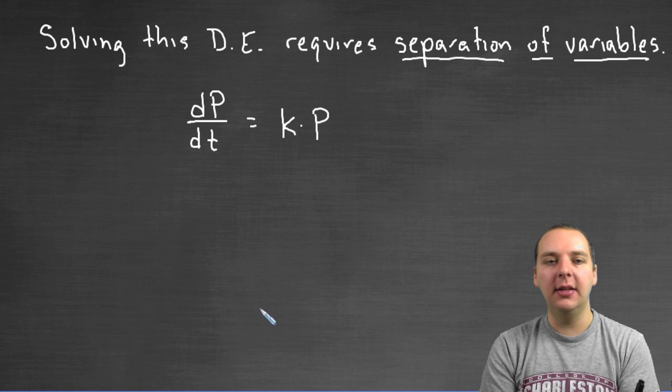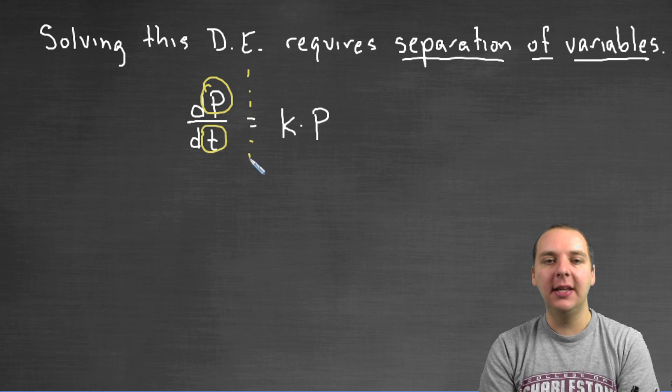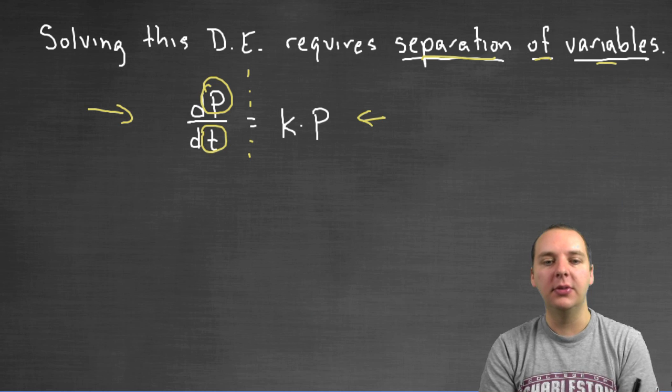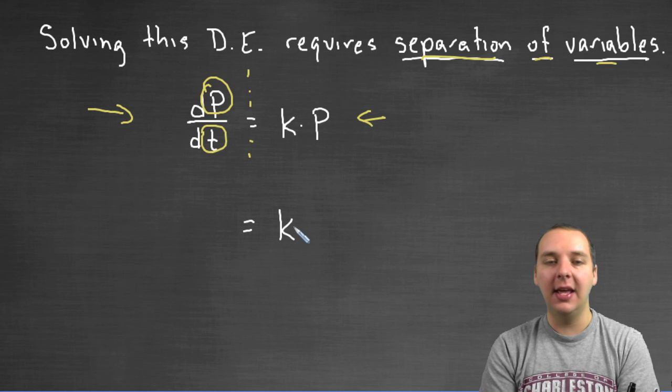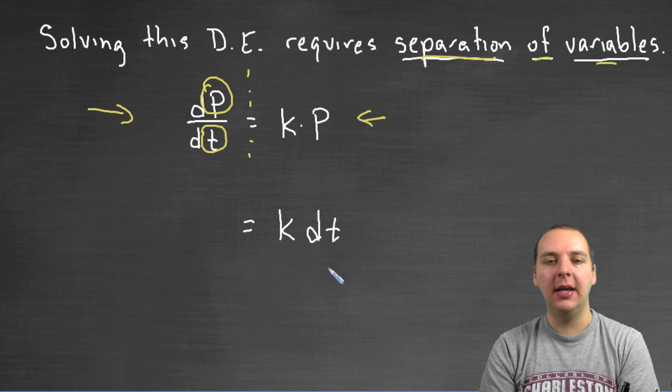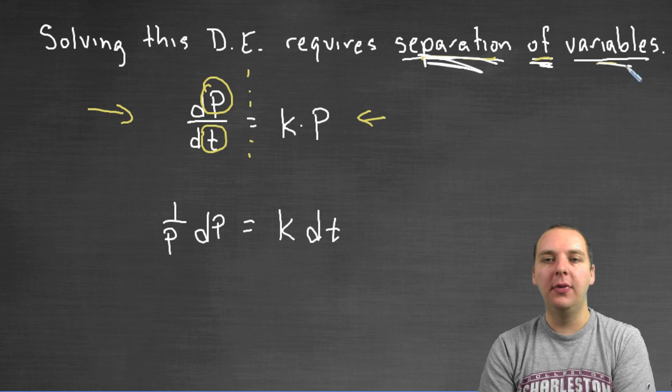So to do separation of variables, the idea is very simple. We're going to try to separate the variable p from the variable t. So we're going to try to put a line in the sand, and we're going to try to put all the p's on one side and the t's on the other side. Thus the name separation of variables. Let's do that. For this one, I think it's pretty simple. The k is a constant. It can stay on the right-hand side. Let's move the dt, multiply it to the right-hand side. And let's divide the p to the left to be over here with dp. So we'll have one over p dp equals k dt. We have just separated the variables.